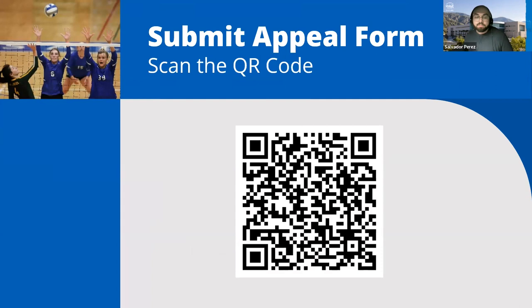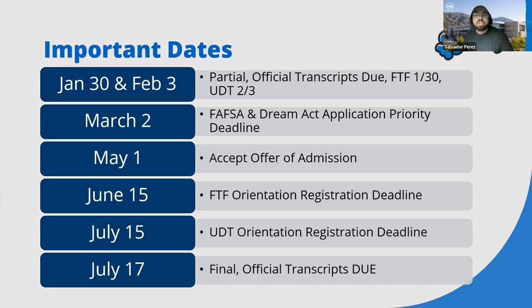Here are some important dates for to-do list items. For those who submitted the FAFSA or Dream Act application, the financial aid department has begun distributing financial aid award letters — if you have questions, contact that department. May 1st is the deadline to accept your offer of admissions. June 5th is the incoming high school students' orientation registration deadline. July 15th is the deadline for transfer students' orientation — this is where we help you register for classes, give you a campus tour, and inform you of services. July 17th is the deadline for final official transcripts.